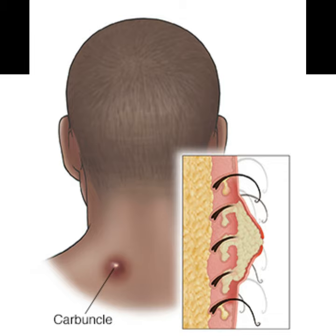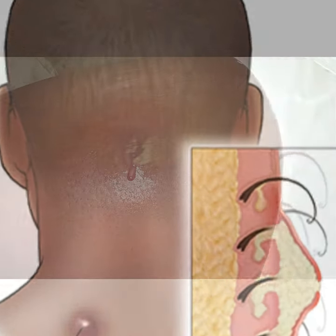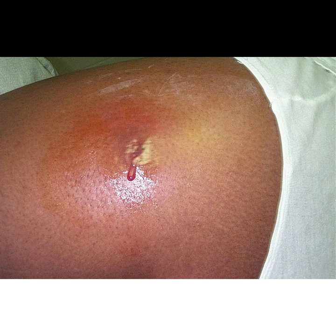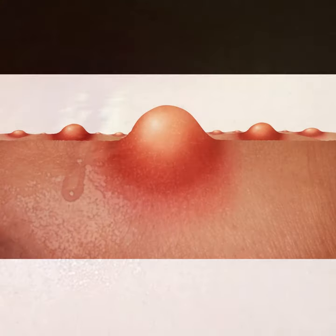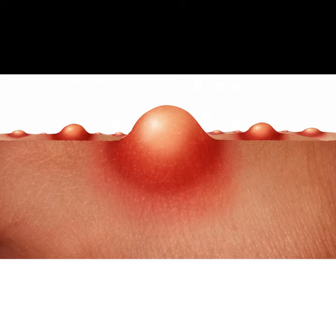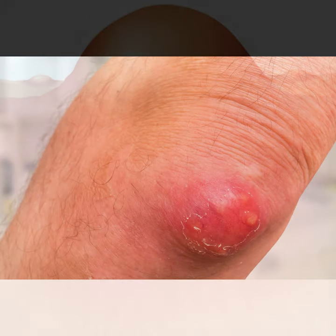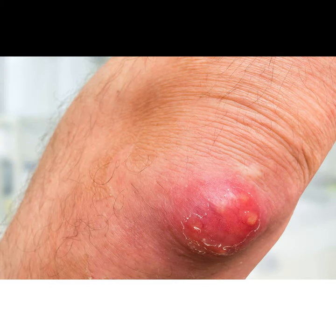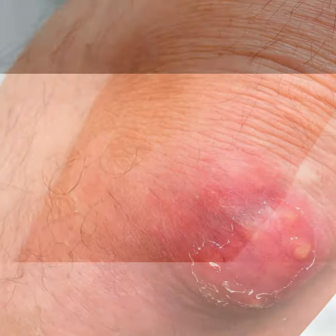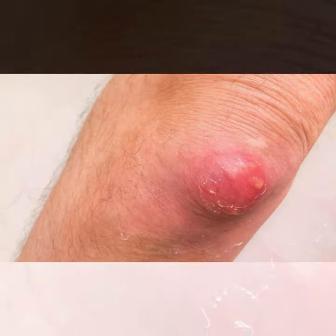What are boils and carbuncles? A boil, or furuncle, is a pus-filled bump that develops in your skin. Carbuncles are clusters of several boils. Boils usually begin as red bumps, which quickly increase in size and fill with pus.